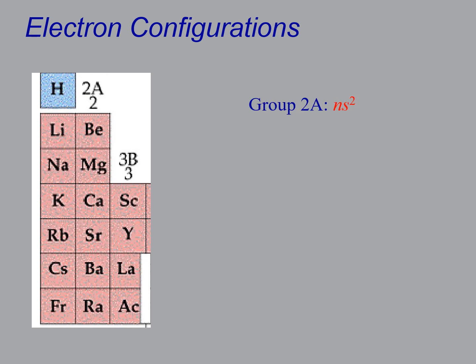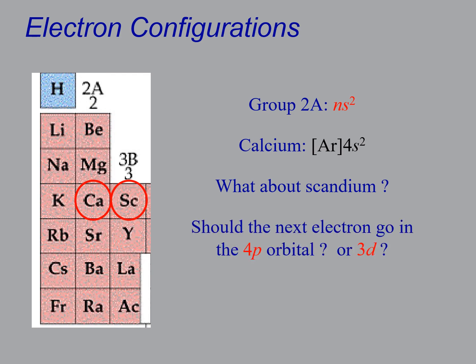So for example, group 2a, so these are ns2. So calcium would be described as an argon core 4s2. So I'm skipping ahead a lot here. So what would scandium be? And would the next electron be a 4p type electron, or a 3d type electron? And the answer is whichever one is lowest in energy. And that is actually the 3d energy level is actually the next one.